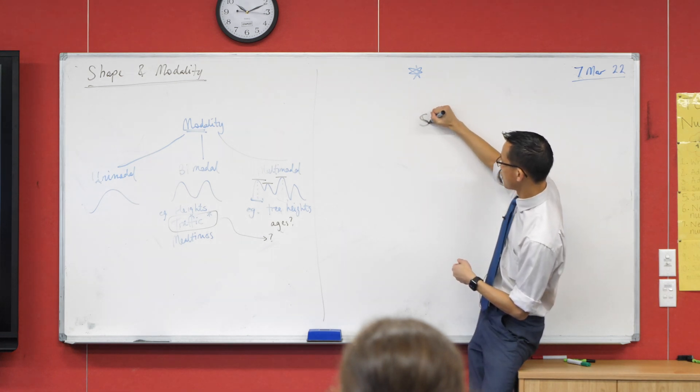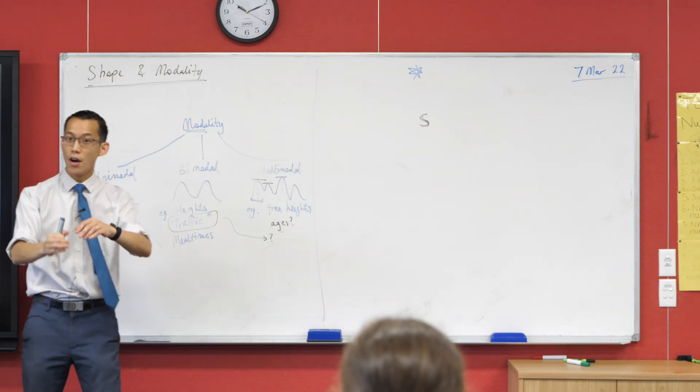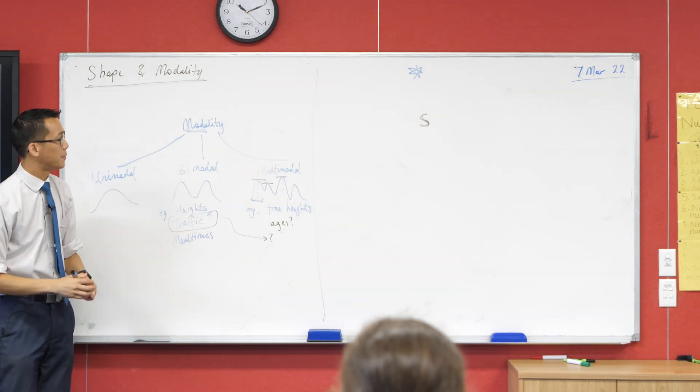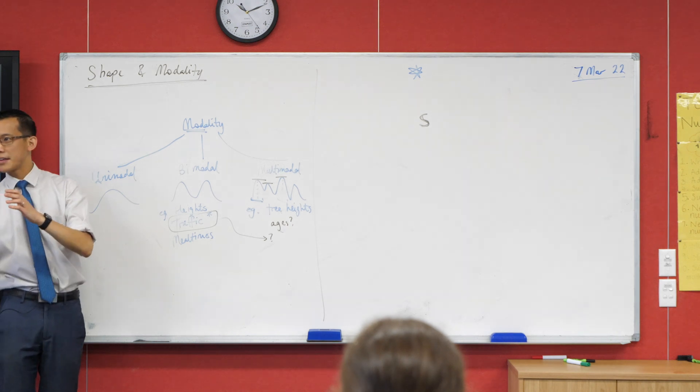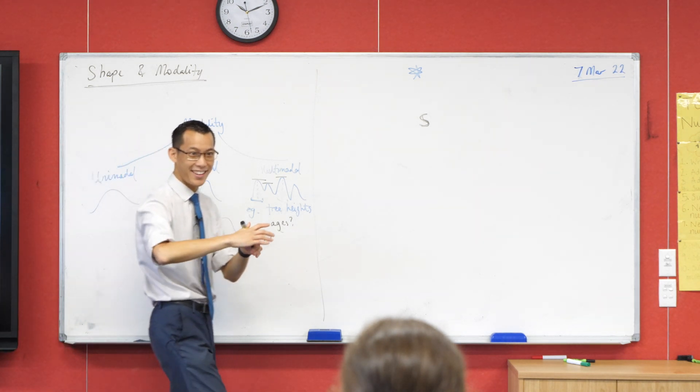I said we would go on to shape. Don't write the word shape. There's a different word that starts with S that we use to describe the shape of a distribution of data. It has to do with which way the data leans. Does anyone know the word? Say it again louder. Skew.